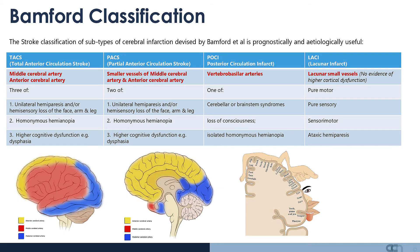We use the Bamford classification of strokes, which is prognostically and etiologically useful. It classifies strokes as TACS, PACS, POCI or LACI — standing for total anterior circulation stroke, partial anterior circulation stroke, posterior circulation infarct, or lacunar infarct. In a total anterior circulation stroke, the middle cerebral artery and anterior cerebral artery are affected, likely causing unilateral hemiparesis and/or hemisensory loss of the face, arm and leg, with homonymous hemianopia and higher cognitive dysfunction.